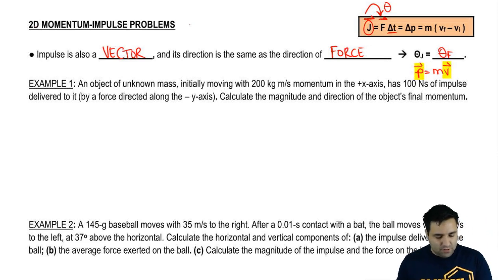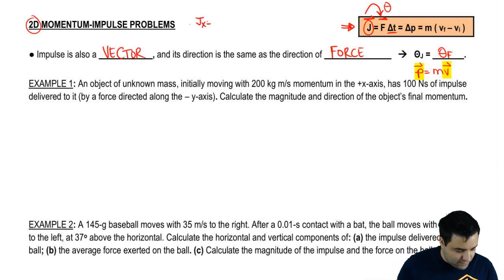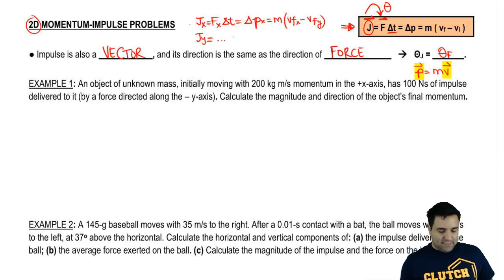Let's talk about two-dimensional momentum and impulse problems. Here's the long form of the momentum impulse equation, and we can write this in the x-axis and in the y-axis. You just put x's everywhere: JX equals FX delta T, changing momentum in the x-axis, mass, velocity final in the x. You could do the same thing for the y-axis, just replace x's with y's.